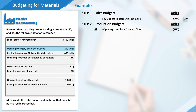However, we're also told that we require a closing inventory figure of 400 units. As these have yet to be made and are in addition to sales demand, we need to add this figure to the total goods we need to produce. Taking into account changes to the levels of inventory gives us a new figure of 4,900 finished goods to produce.